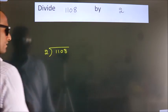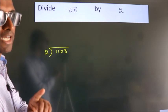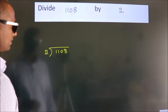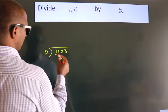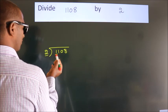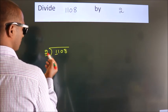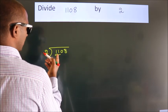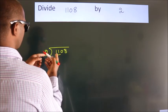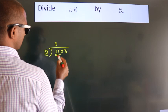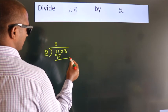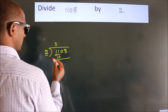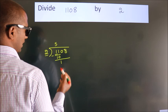This is your step 1. Next, here we have 1, here 2. 1 is smaller than 2, so we should take 2 numbers: 11. A number close to 11 in the 2 table is 2 fives, 10. Now we should subtract. We get 1.